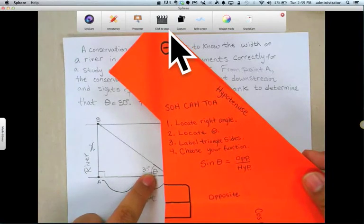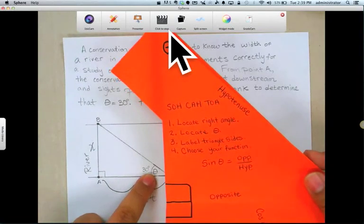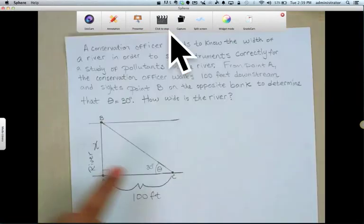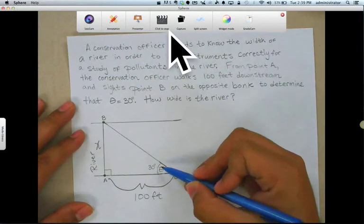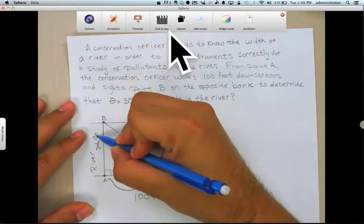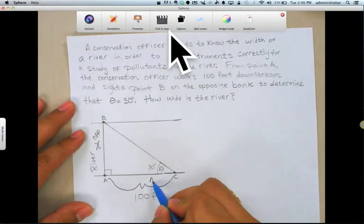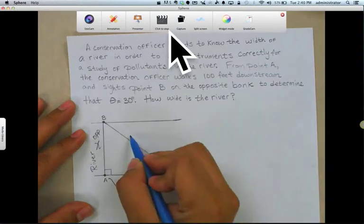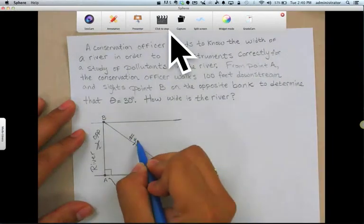Now we're going to move on to step number three and label our triangle sides. So if this is theta, this is opposite. This right here is the adjacent. And this right here is the hypotenuse.